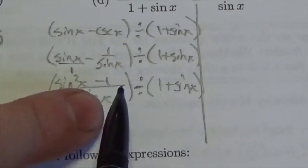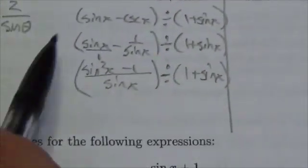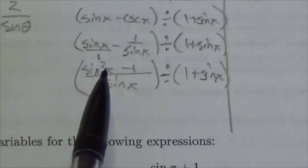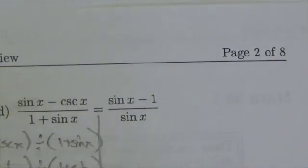But look what we've created in the numerator here. I've got sine squared minus 1. Now yeah I could probably work an identity into that. But if you look on the right hand side, I could work a Pythagorean identity here. I could make this negative cosine squared but that's not going to get me closer to this expression on the right hand side.